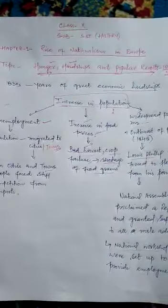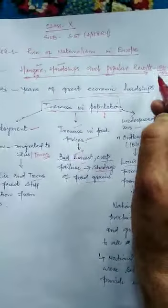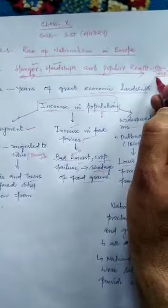We are discussing chapter 1. The name of the topic is Hunger, Hardships and Popular Revolts. The period of our study is 1830 to 1848.